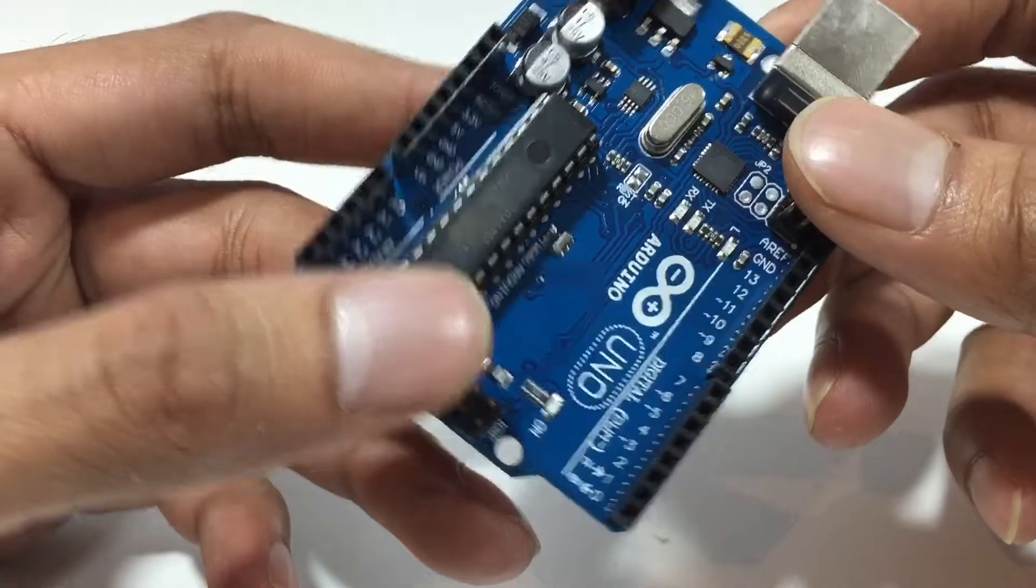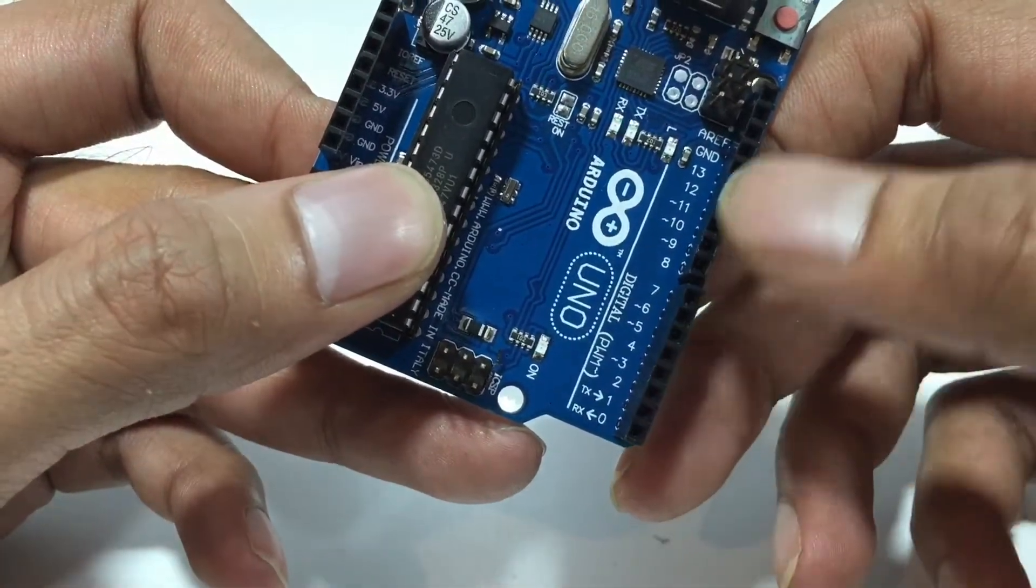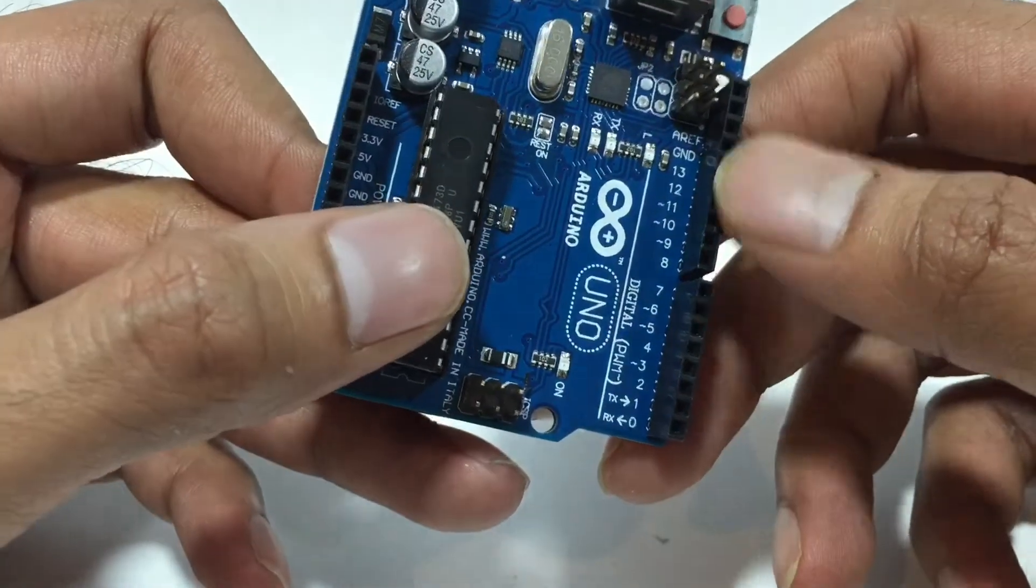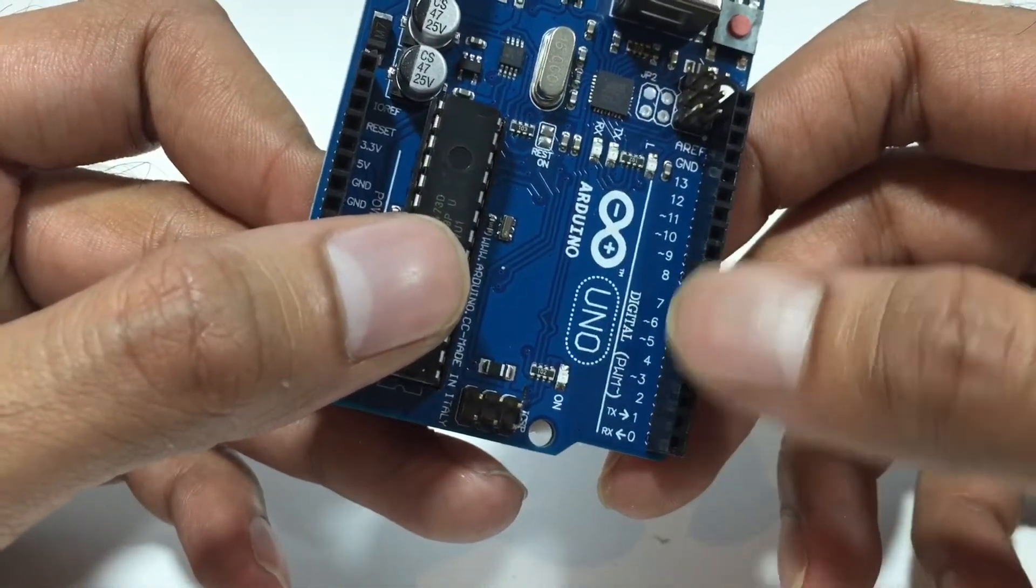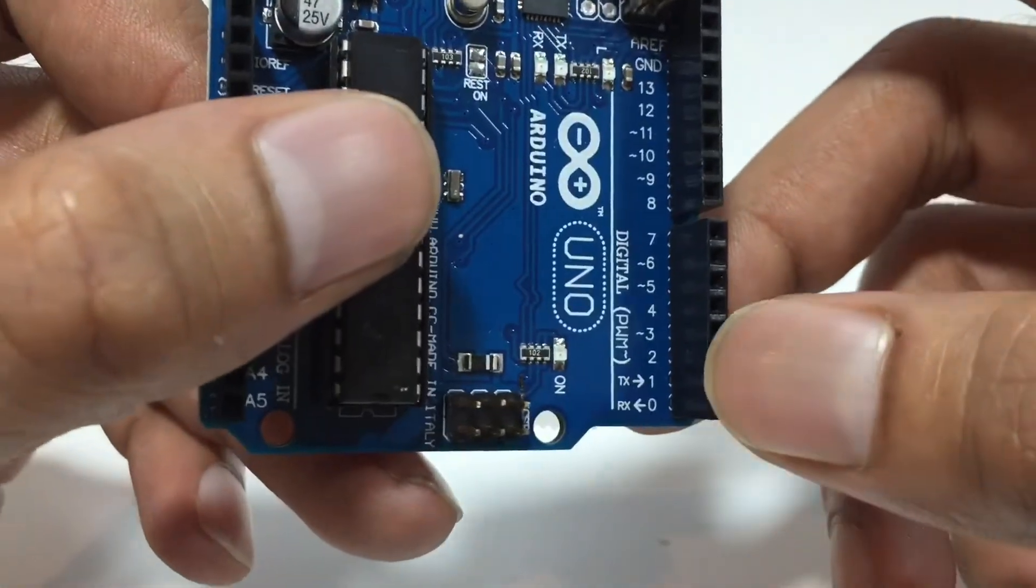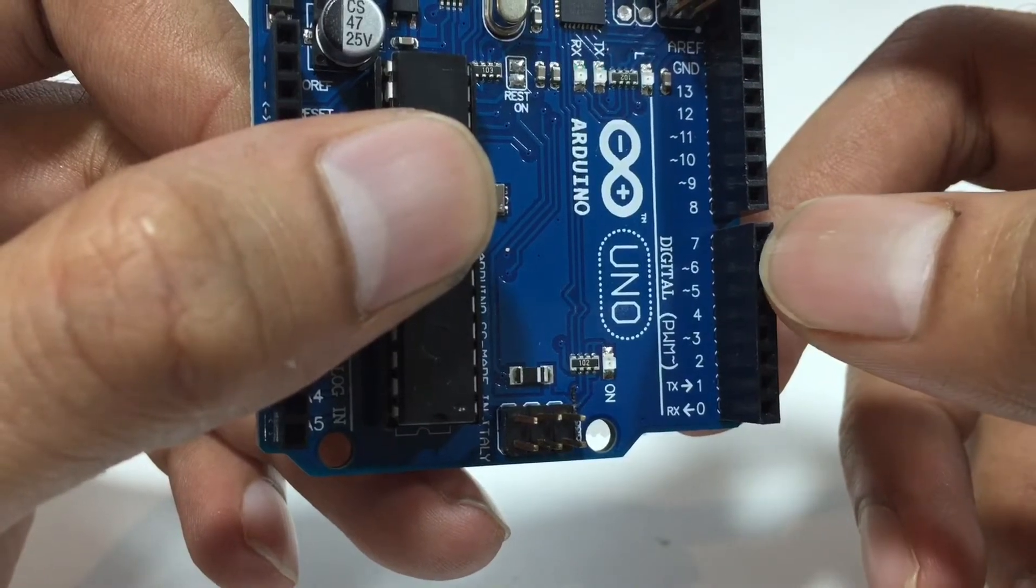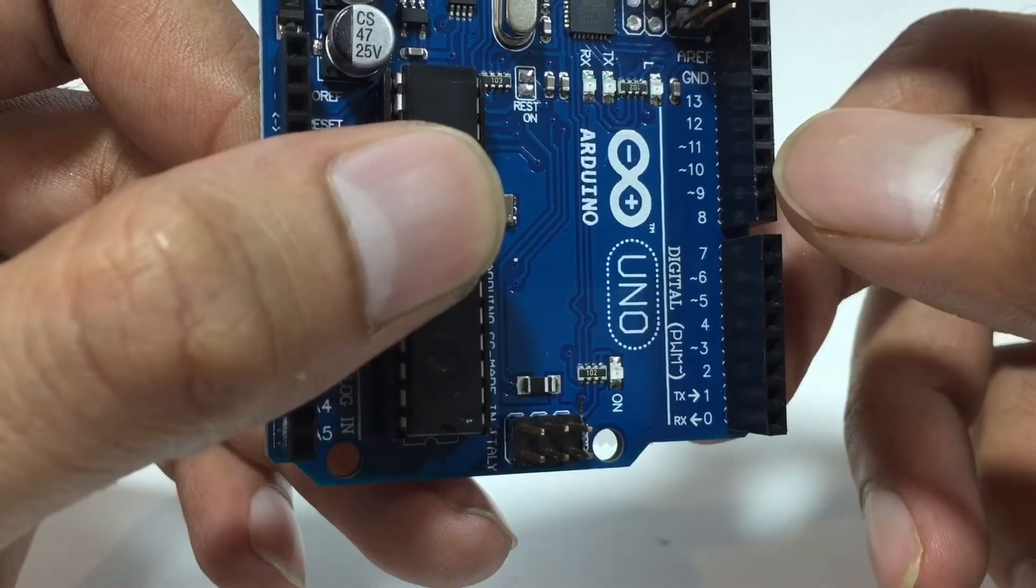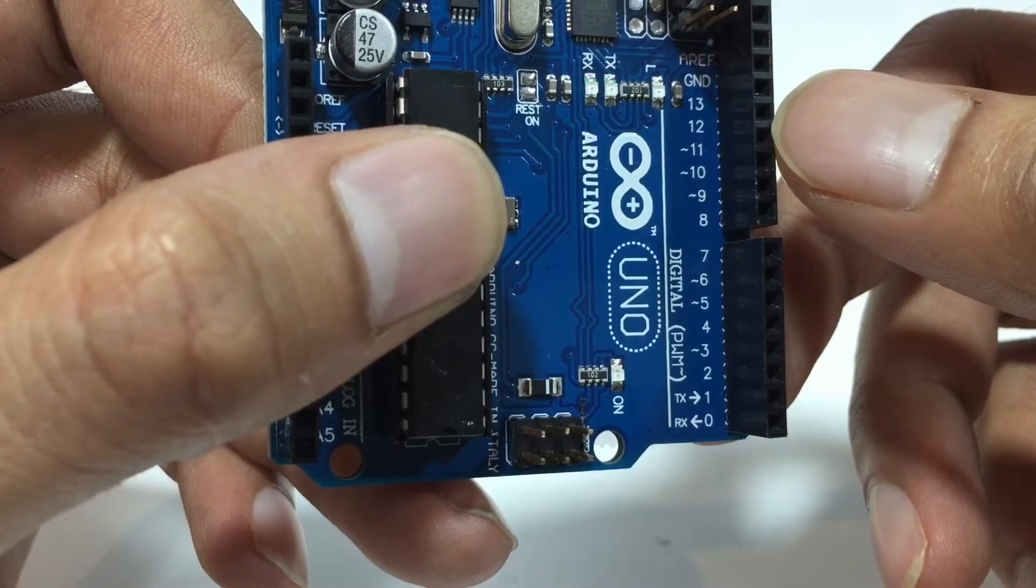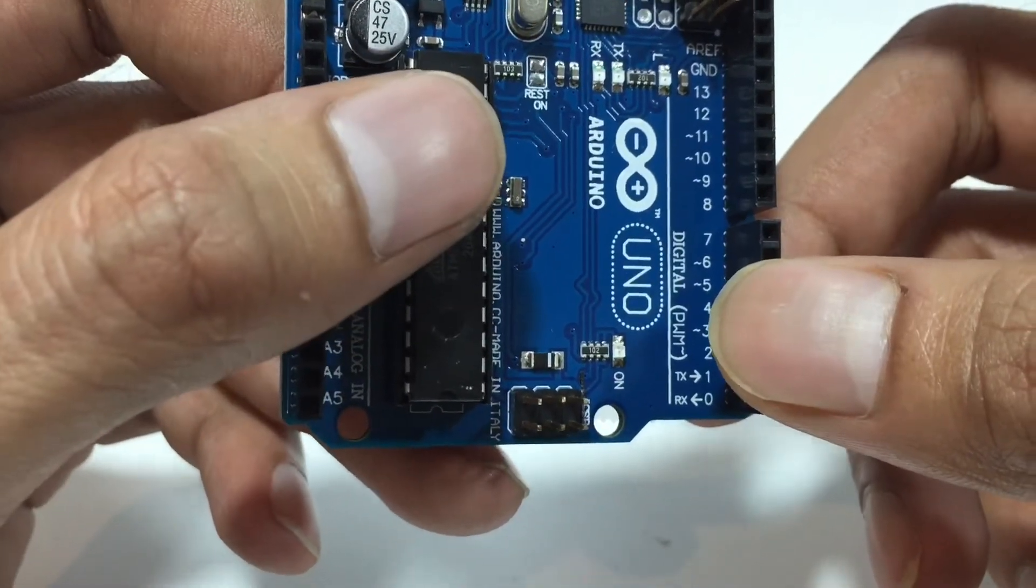You can see here 14 digital pins from 0 to 13, including 6 pulse width modulation pins. You can see there is a wave sign in pin number 3, pin number 5, pin number 6, pin number 9, pin number 10, pin number 11. These 6 pins are used as pulse width modulation pins.